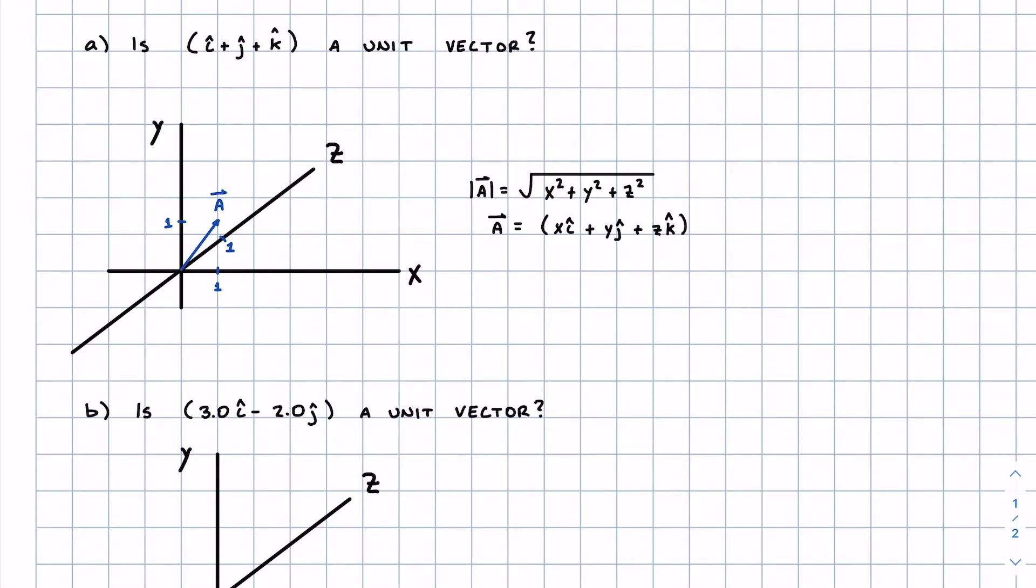Well, a unit vector is a vector that has a magnitude equal to one. That means that the length of, let's say this A vector is one. So let's check that here. We know that using Pythagorean's theorem...